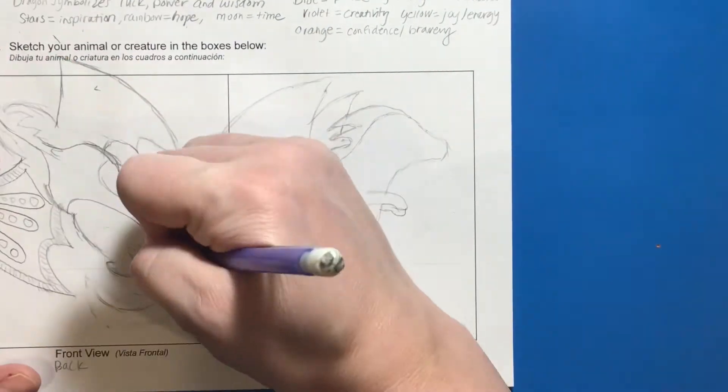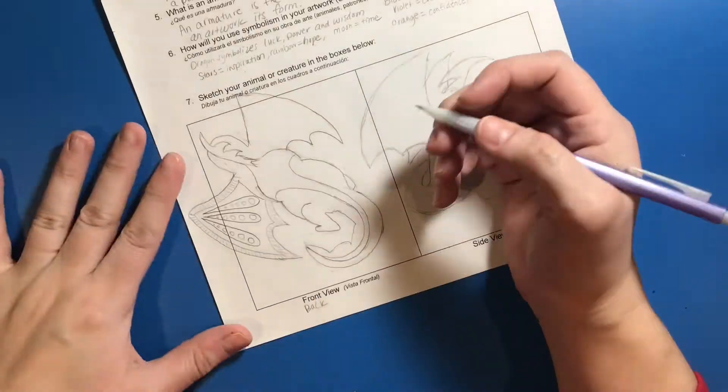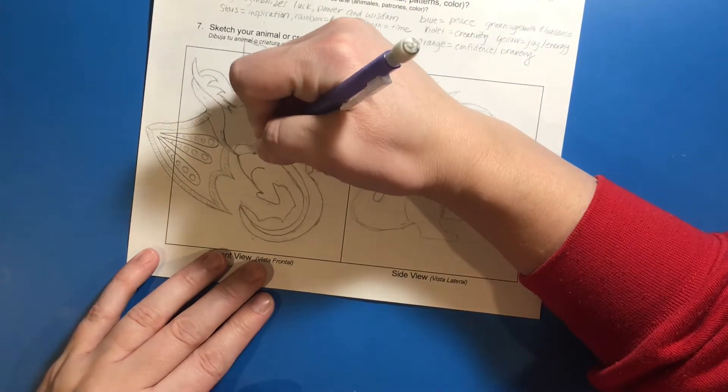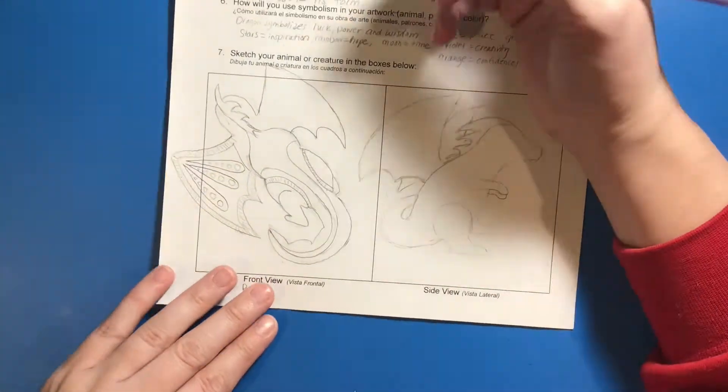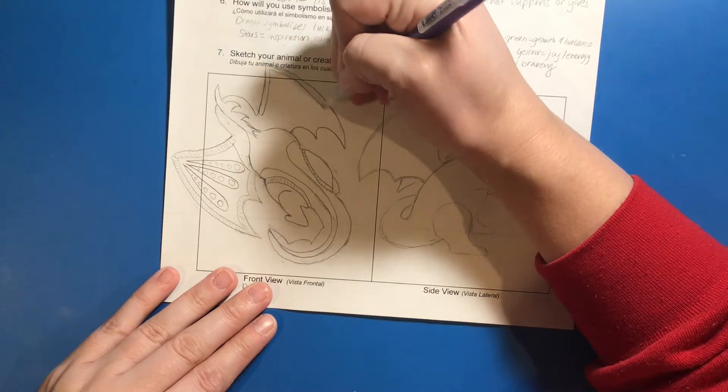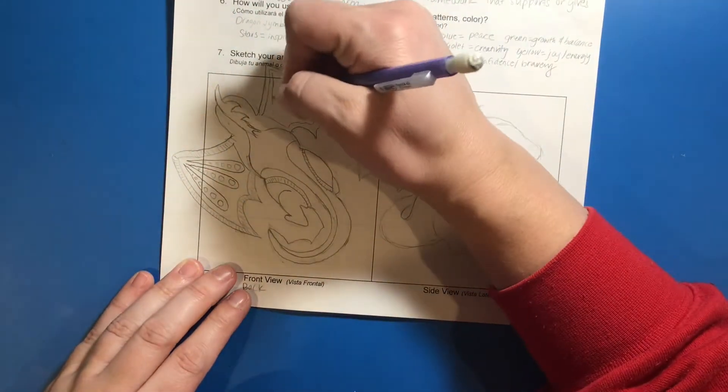Another thing to keep in mind why we are sketching from two different views is to help us think about what our creature will look like from any angle. Remember, for this project we want to make it interesting from any view or any side that it is looked at. Once you have your form figured out from both views,